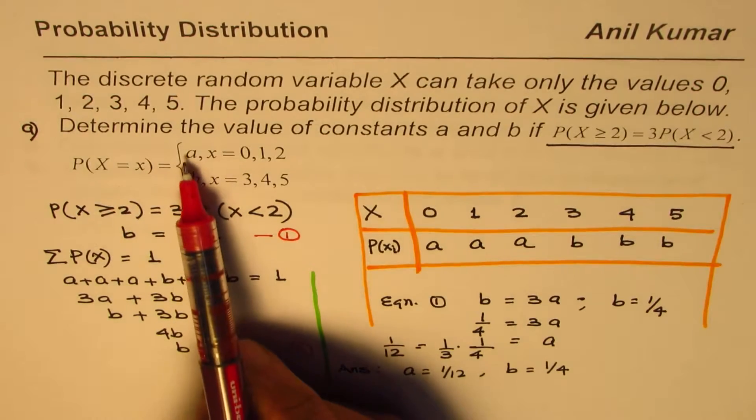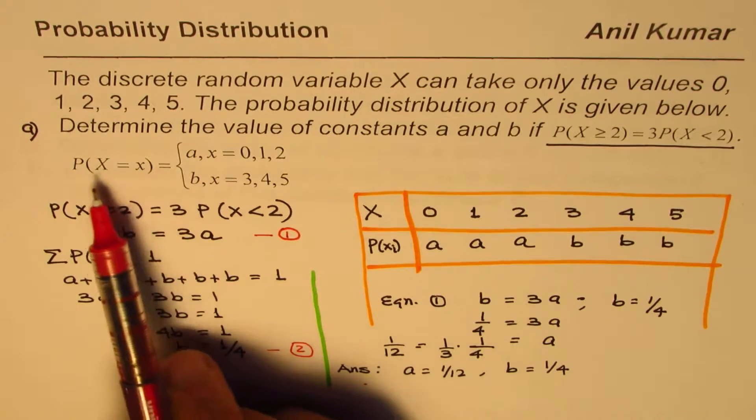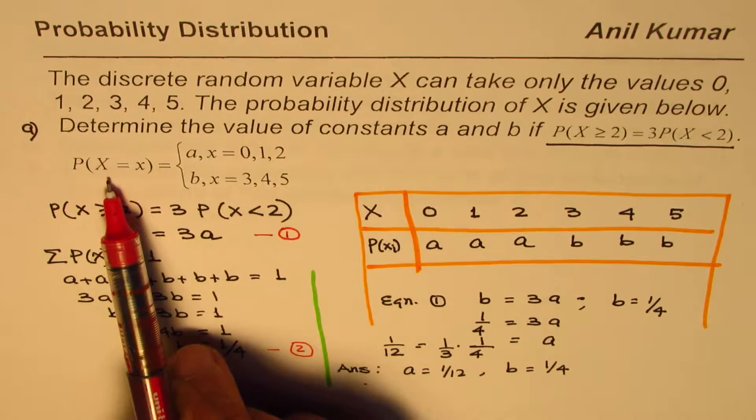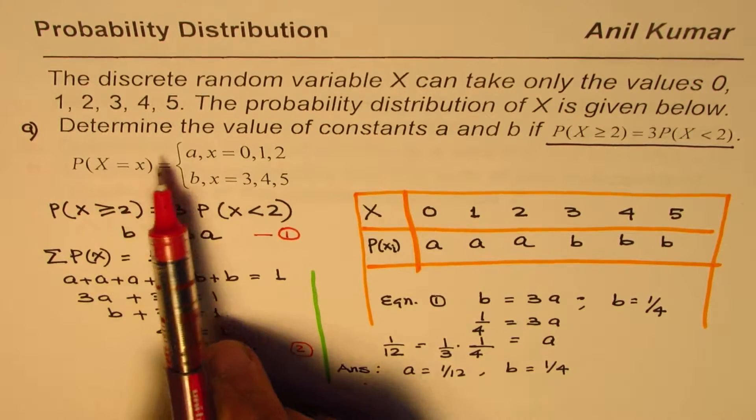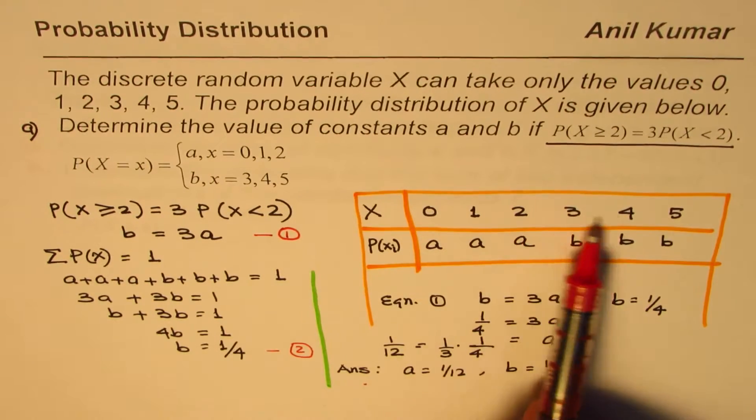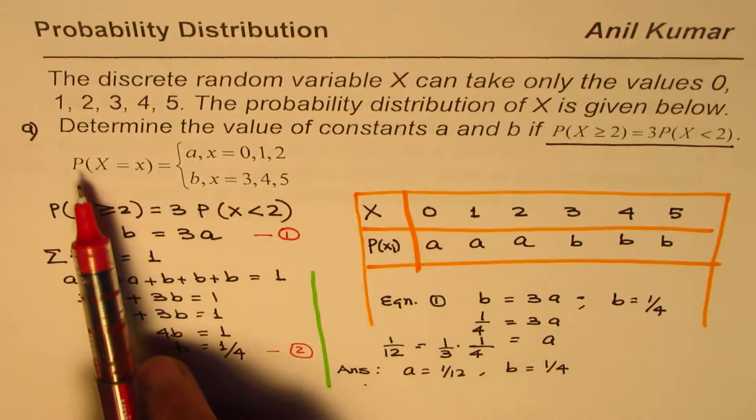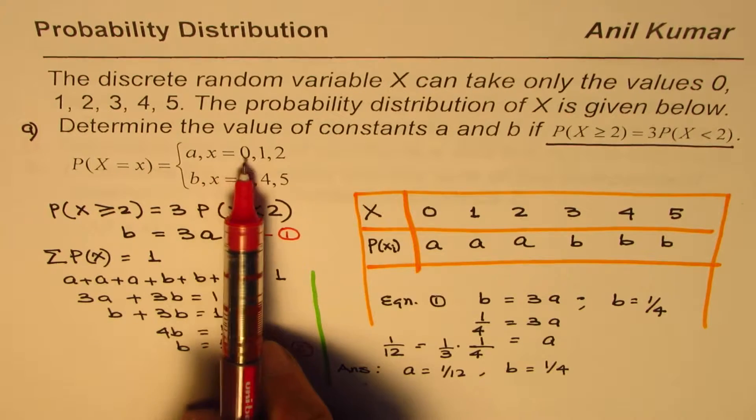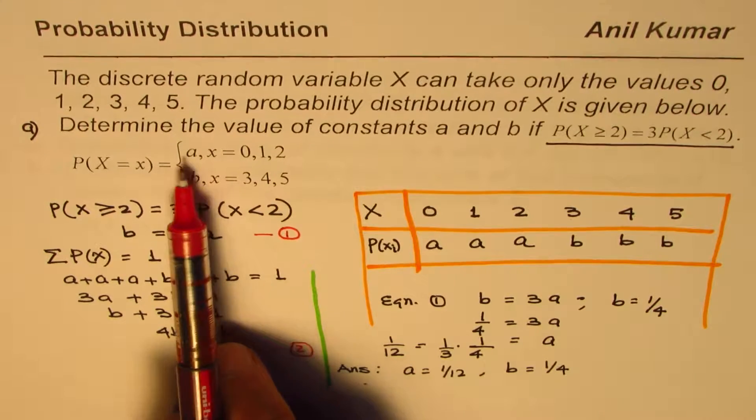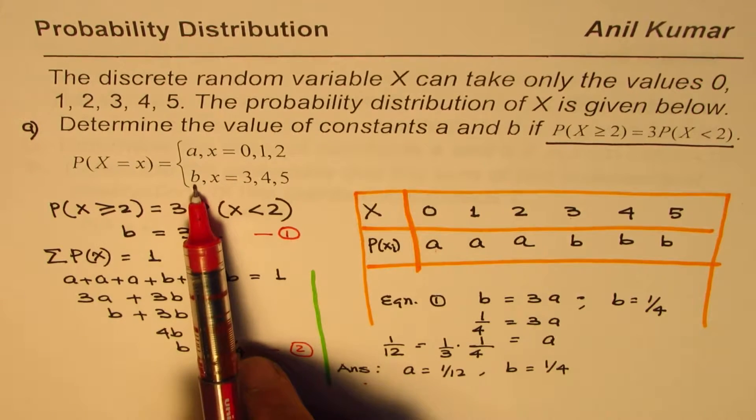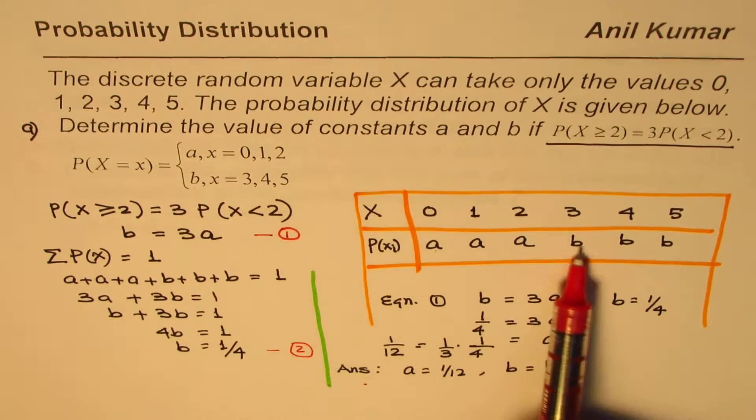Part A was to find the variables a and b. It is given to us that the probability distribution, the random variable x, can have these values 0 to 5: 0, 1, 2, 3, 4, and 5. And if x is 0, 1, or 2, a is the value. So a is the value for 0, 1, and 2. B is the value for 3, 4, and 5.